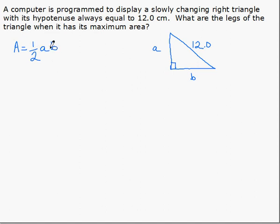We need a secondary equation now to replace one of our two variables. Since we have a right triangle, we can use the Pythagorean Theorem, or 12 squared equals A squared plus B squared, and we choose one of the variables to solve for.